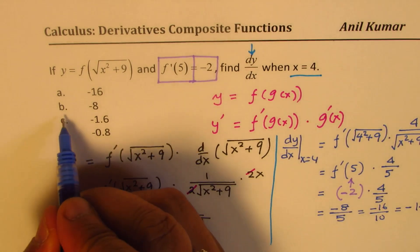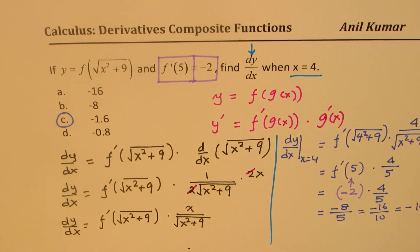So the correct option is option C, which is minus 1.6.